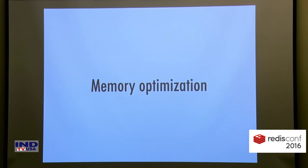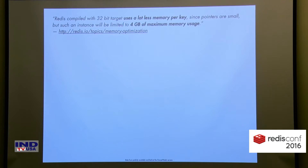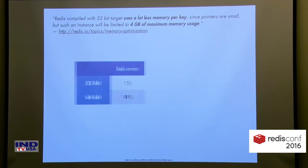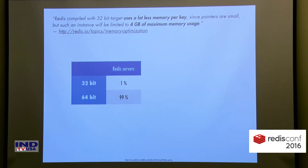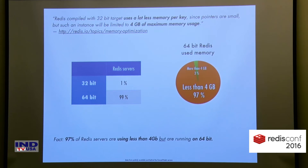Performance is one thing, memory usage another. When you look at Redis.io documentation about memory optimization, you can learn that 32-bit Redis uses a lot less memory per key but is limited to 4GB of memory. At Redsmin, 99% of the Redis servers we manage are 64-bit. So we looked at the memory usage and discovered that 97% of them were using less than 4GB of memory — definitely a huge loss of memory per server.